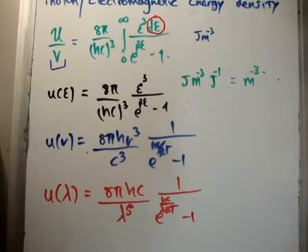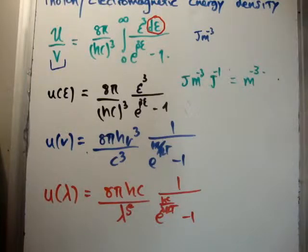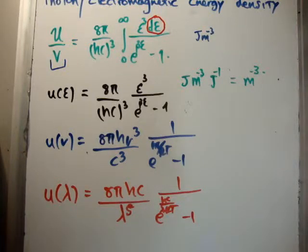This terminology is very important: energy density per unit energy interval, energy density per unit frequency interval, and energy density per unit wavelength interval. Thanks for watching — please share it with your friends, subscribe to my channel, and check out universityphysicstutorials.com. Tutorial number 46 is a similar one to this but with more historical context.